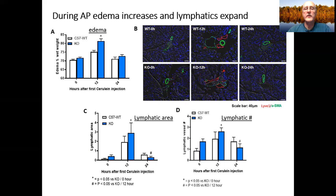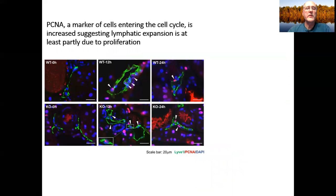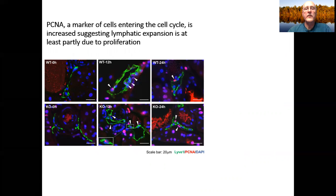This led us to ask the question, could this increase in lymphatics be due to cell proliferation? To examine that, we used PCNA staining, a marker of cells entering the cell cycle. In our pictures below, LYVE1, the lymphatic marker is in green, PCNA is in red, DAPI is in blue. I would like to point out in the center column at 12 hours, there is a significant amount of green staining cells that are positive for LYVE1, which also stain positively for PCNA. This suggested to us that the lymphatic expansion in the pancreas is at least partly due to proliferation.